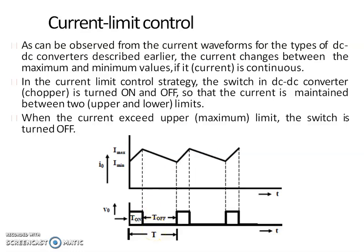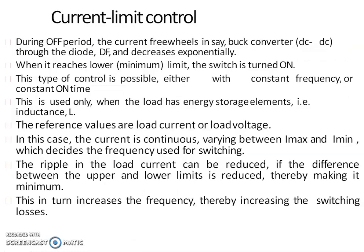Current Limit Control involves a feedback loop. The trigger circuit for the chopper is therefore more complex. The PWM technique is also employed in current limit control. In this scheme, a current limit is set between a maximum current and a minimum current. When the current to the chopper circuit reaches its maximum value the chopper switch turns off, and when the current decays to the minimum value the chopper switch turns on. To control the chopper circuit, a feedback loop and triggering circuit are needed.